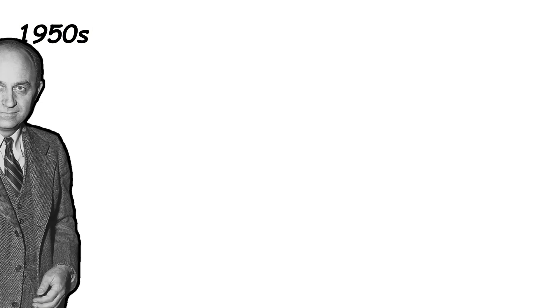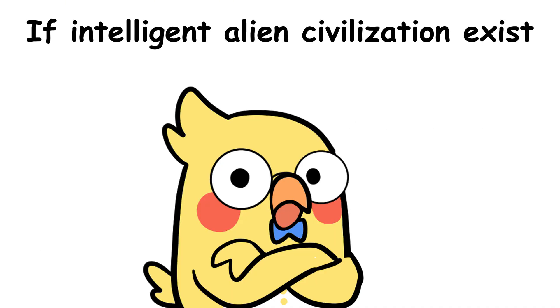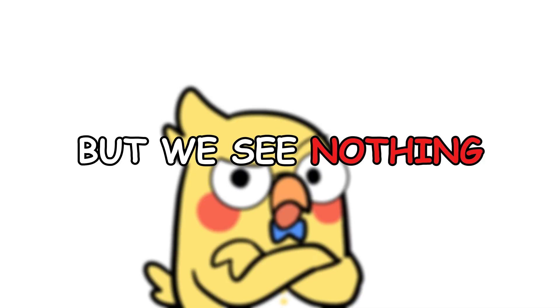Fermi's Paradox, where is everybody? Back in the 1950s, physicist Enrico Fermi asked a simple question. If the universe is so big, and life is so probable, then where is everybody? Because if intelligent alien civilizations exist, at least one of them should have colonized the galaxy by now. But we see nothing.